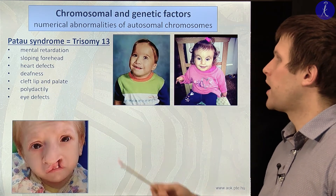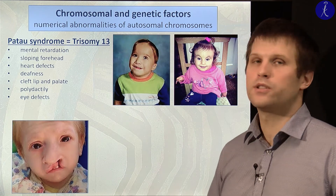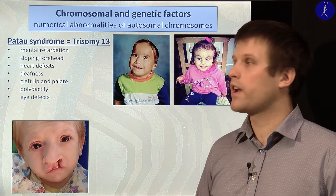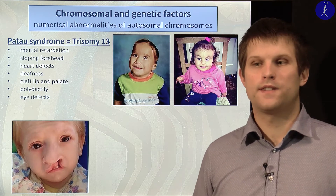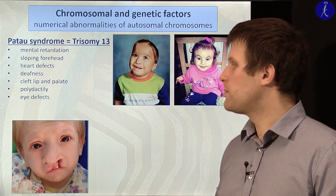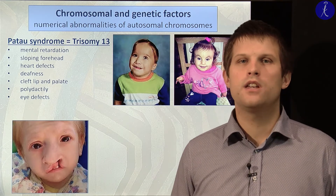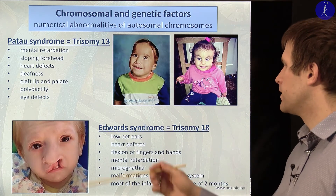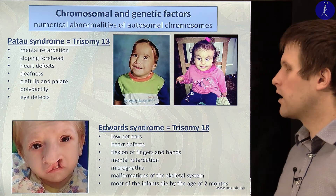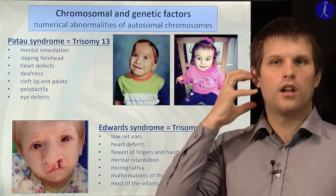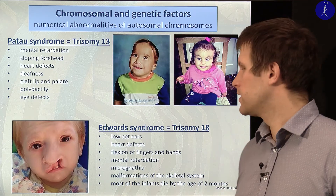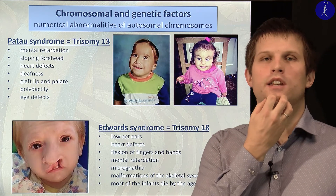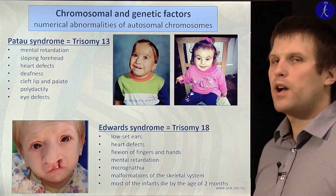Patau syndrome results from trisomy 13 and is frequently associated with mental retardation, sloping forehead, heart defects, deafness, cleft lip and palate, polydactyly, and eye defects. Edwards syndrome results from trisomy 18 and presents with low-set ears, heart defects, mental disorders, micrognathia — the smaller mandible — and skeletal malformations.